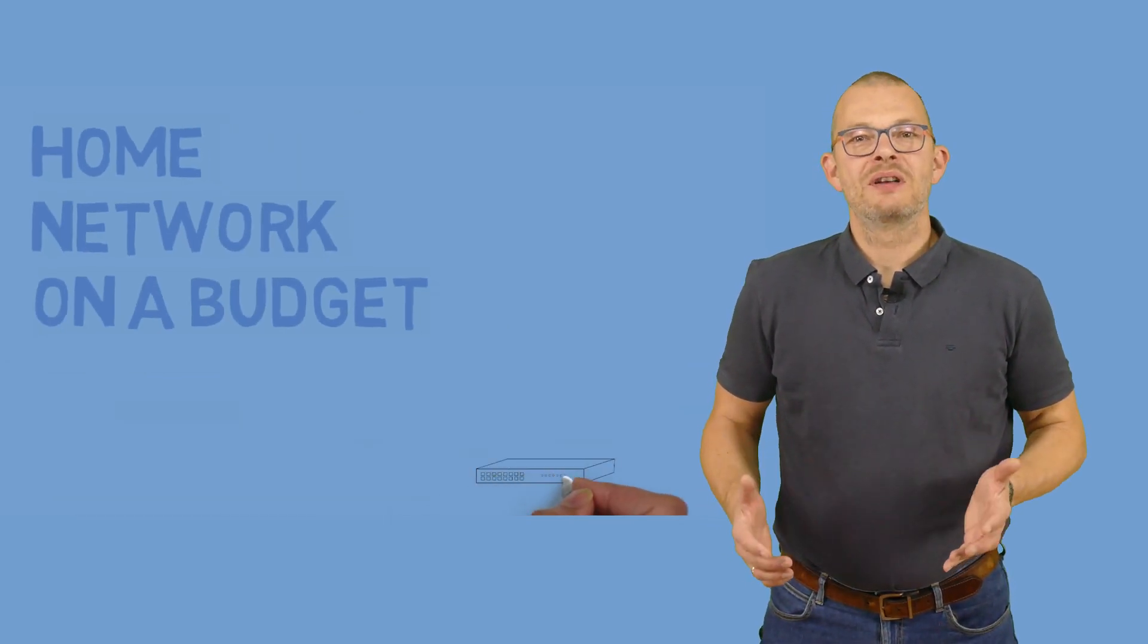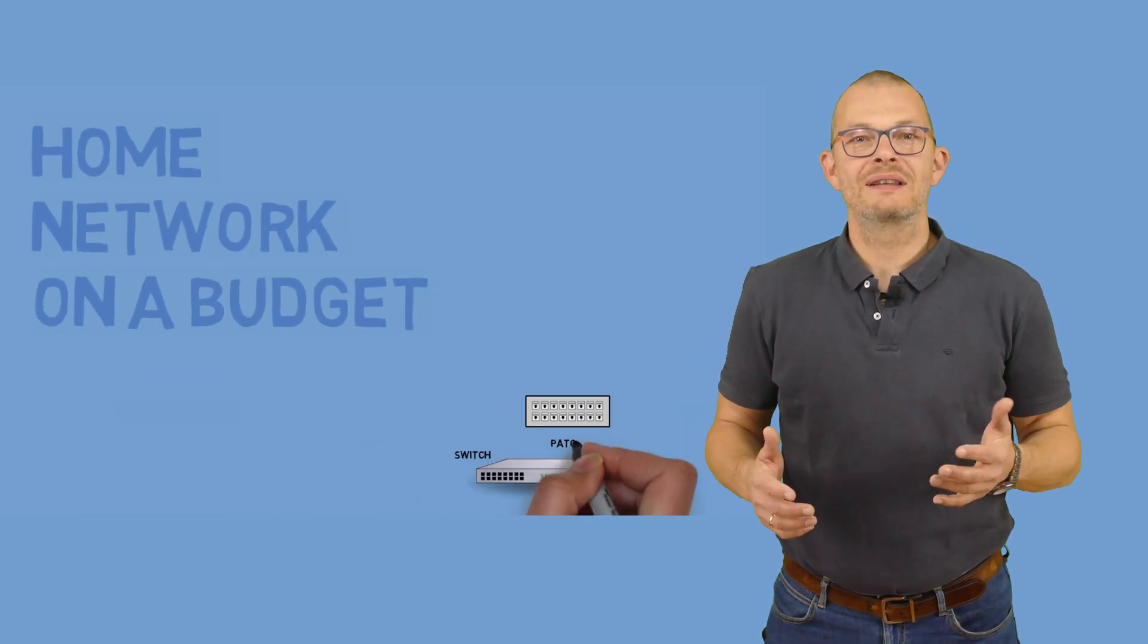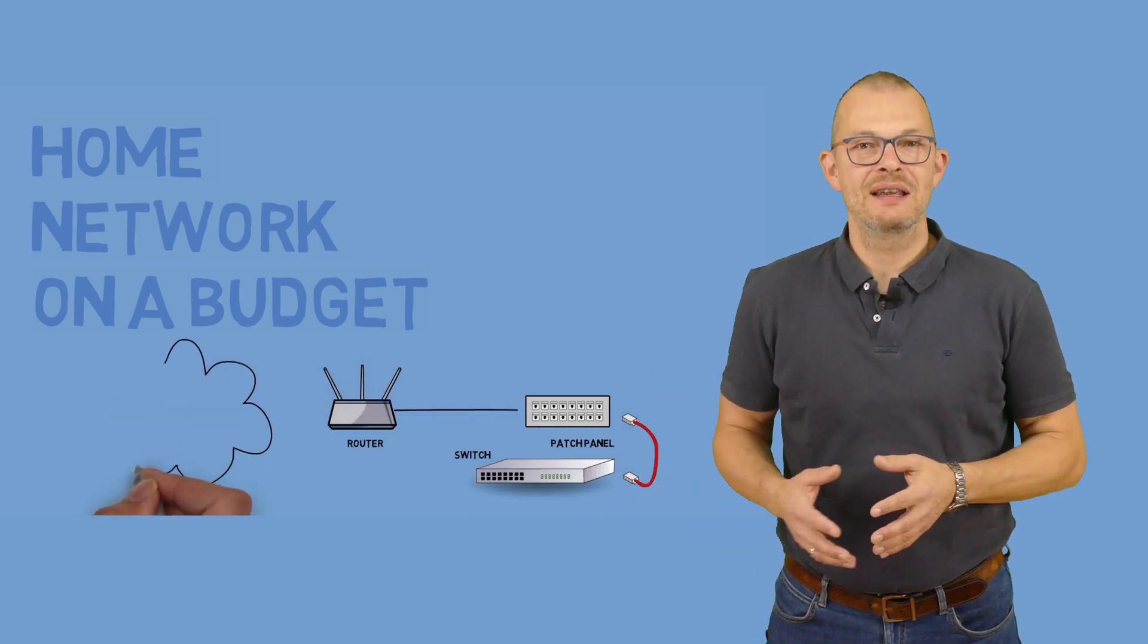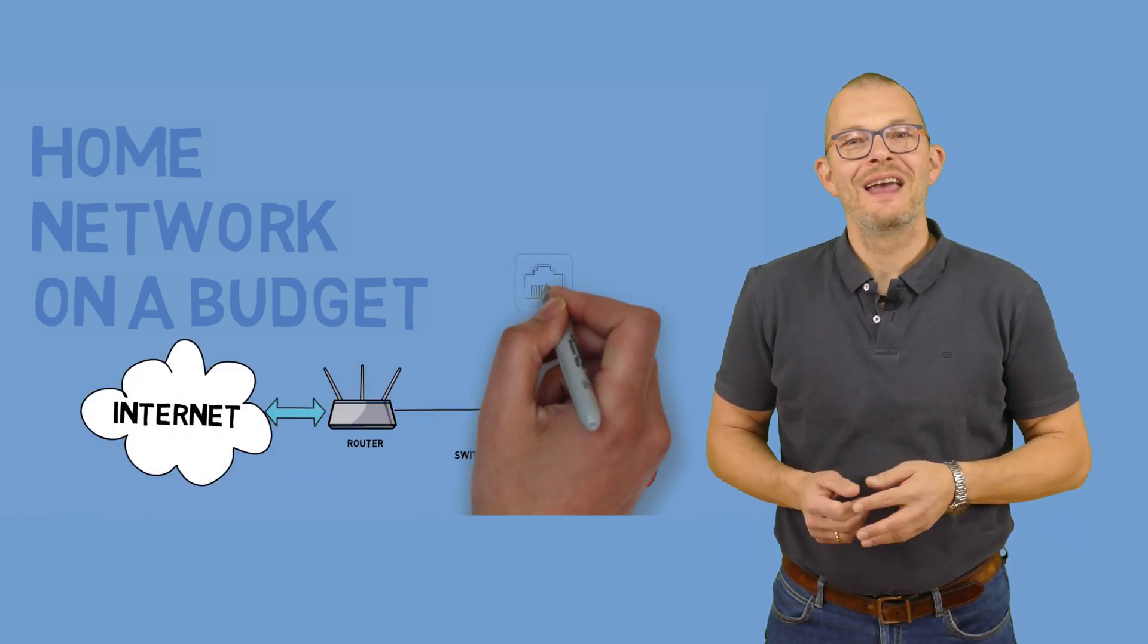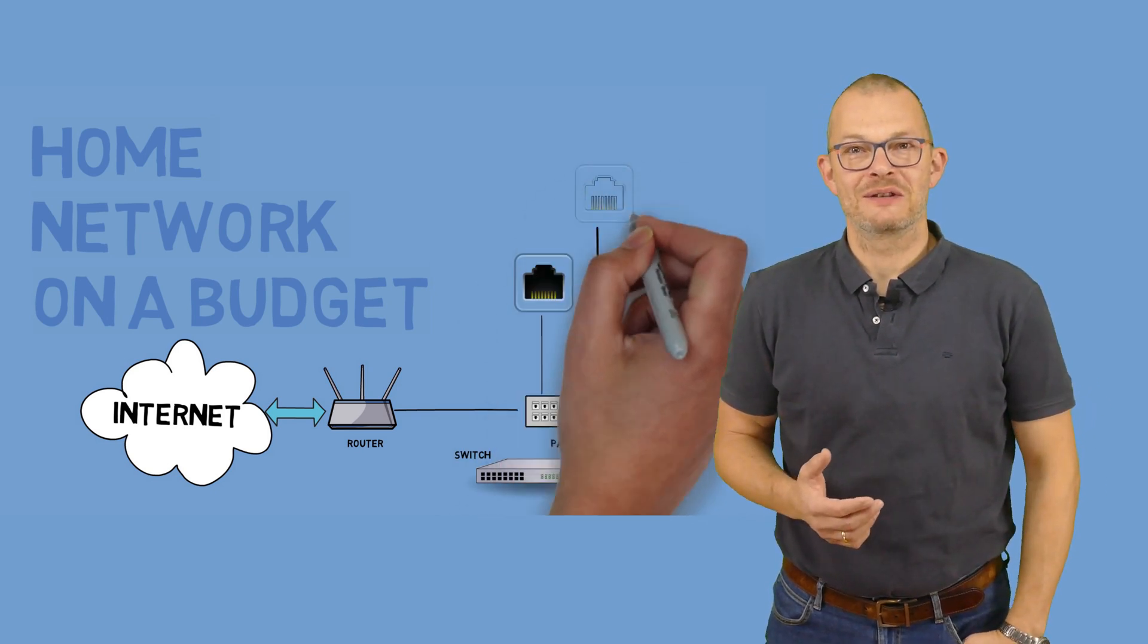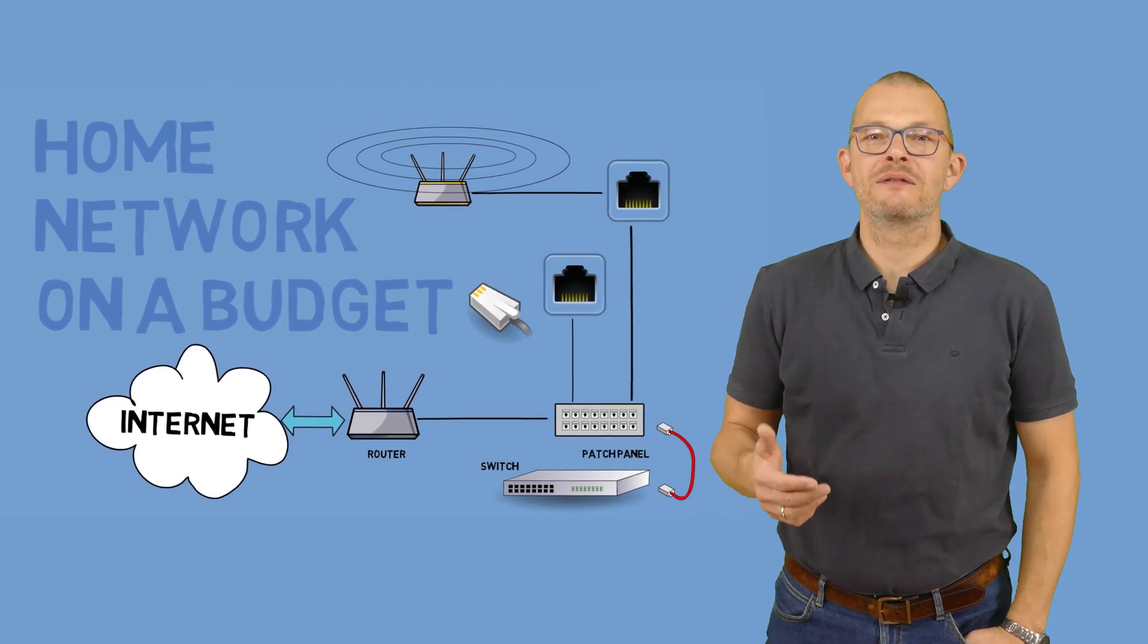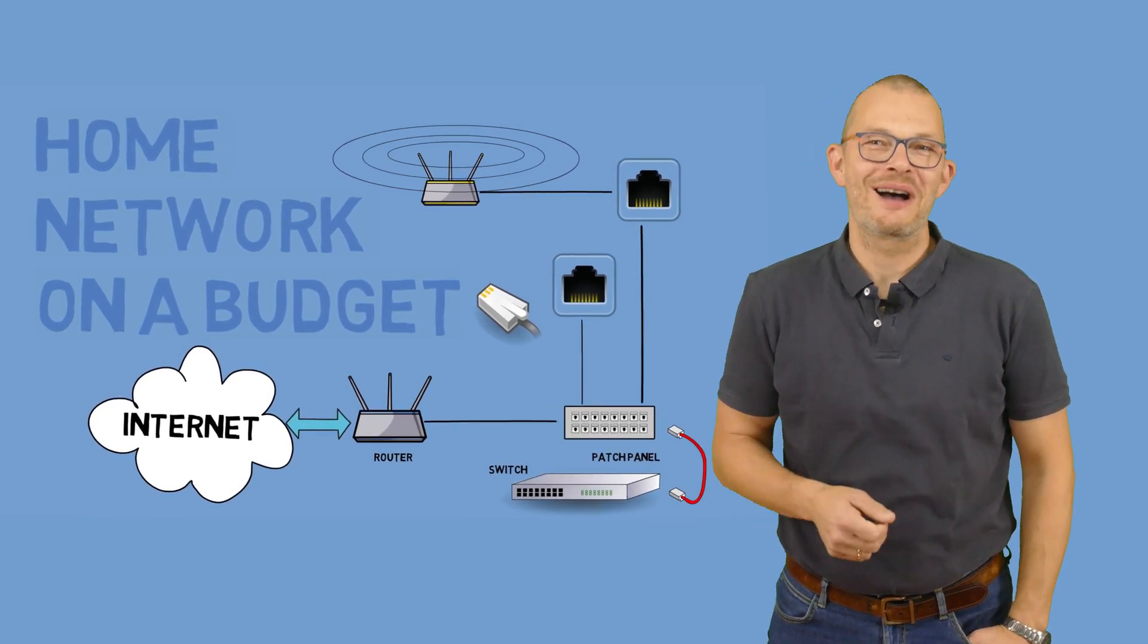In the first episode of the budget home networking series, we looked at how to cable our home, which components to put in such as a 19-inch rack, a patch panel and a switch, and what type of cables and racks to use. Today we'll look at how we can interconnect and extend these devices in order to have good internet connection in the whole house.